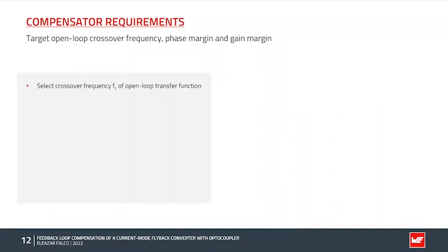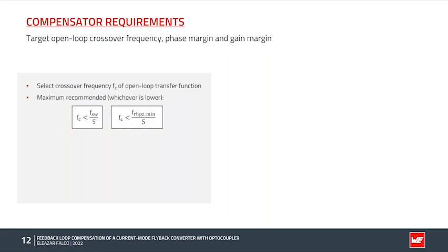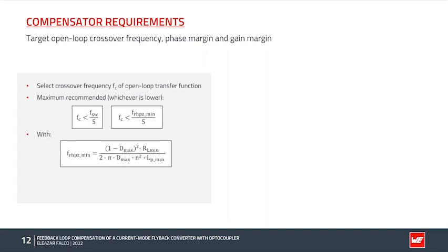The first step is to select the target crossover frequency of the open-loop transfer function. The higher the crossover frequency, the faster the reaction time of the closed-loop system will be. However, there is a maximum recommended limit which is one-fifth of the switching frequency, or one-third to one-fifth of the minimum right half-plane zero frequency, whichever is lower. The minimum RHP zero frequency is calculated at minimum input voltage and full load, where the duty cycle and the transformer magnetizing current are at their maximum.